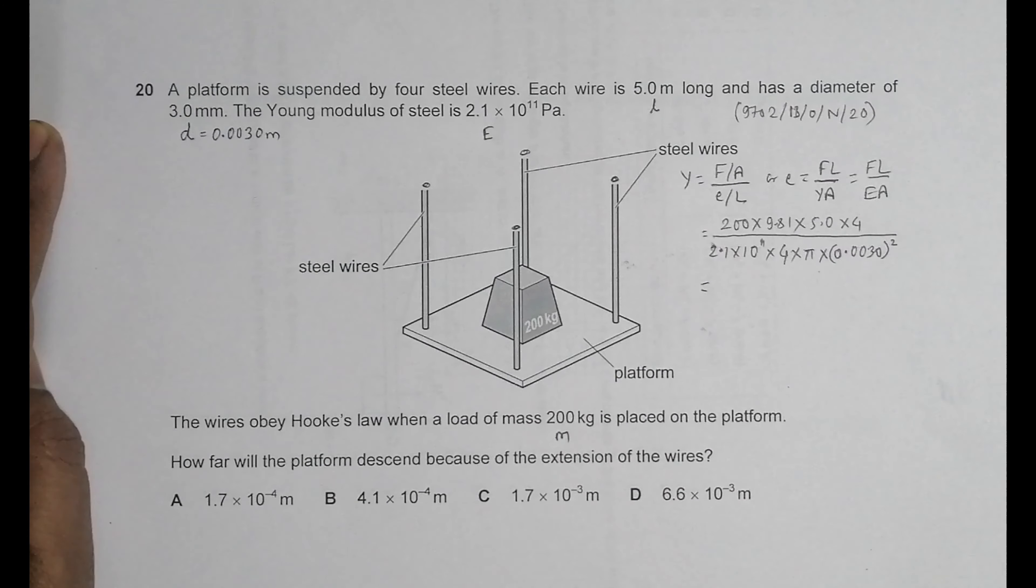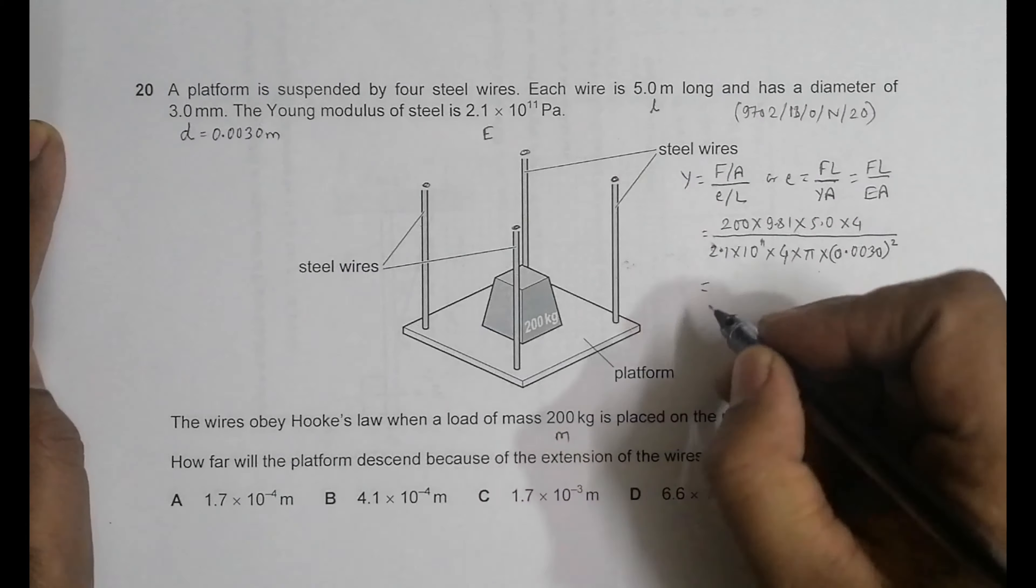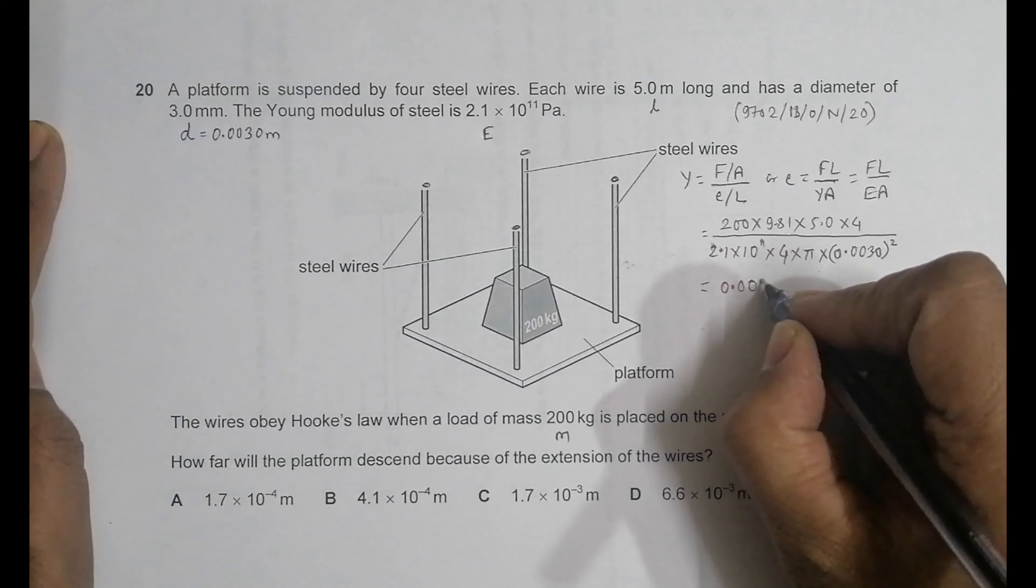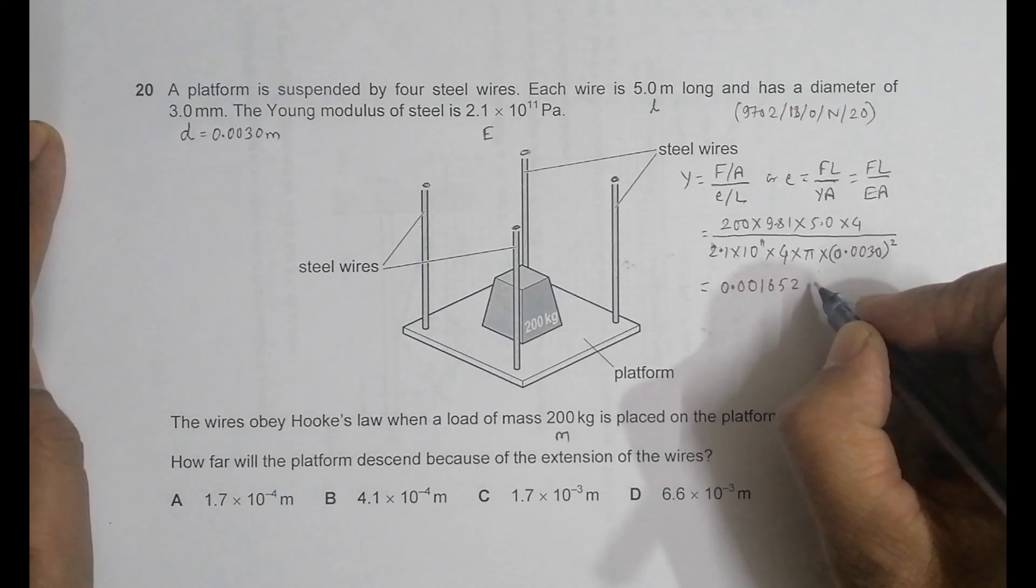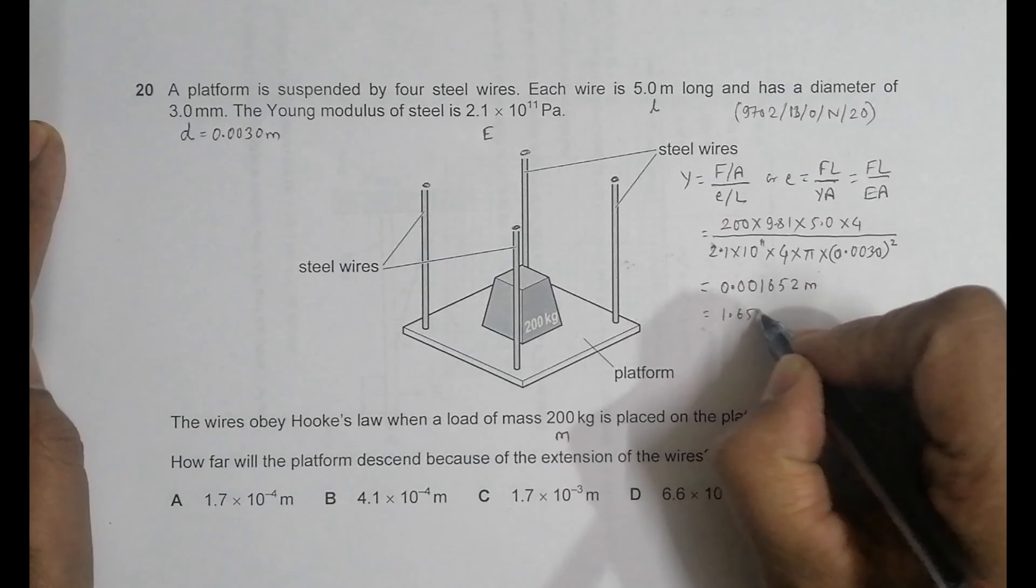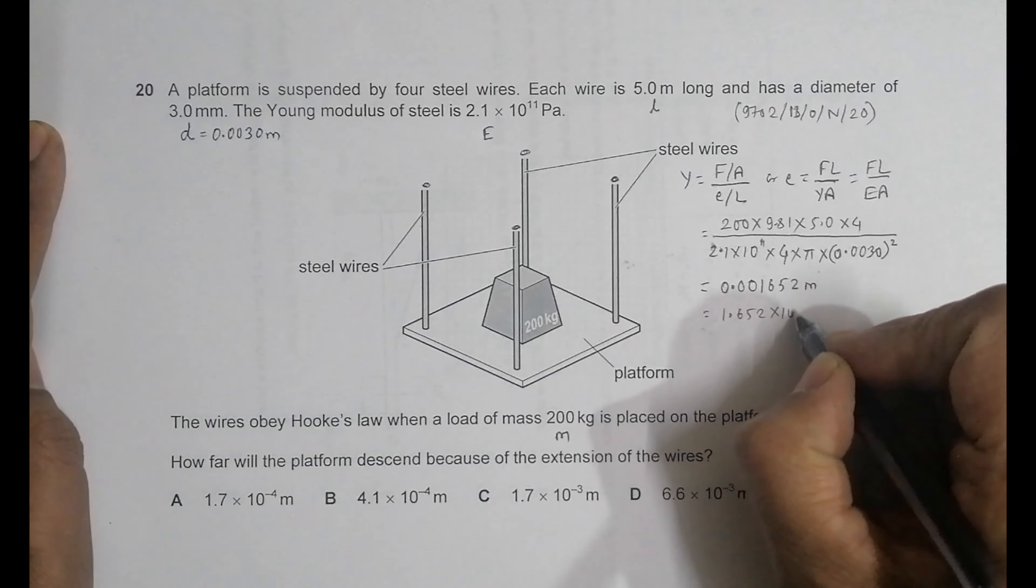When I calculate it: 200 times 9.81 times 5 times 4, divided by 2.1×10^11 times π times 0.003 squared. This comes to 0.00165252 meters, equal to 1.652×10^-3 meters.